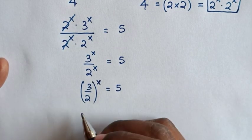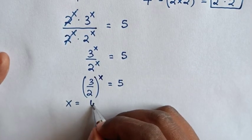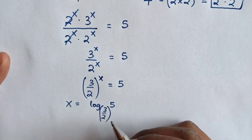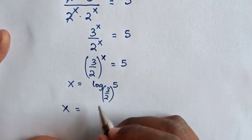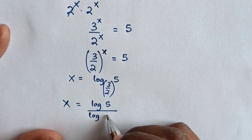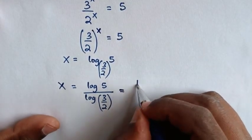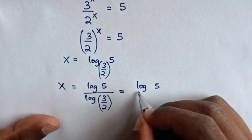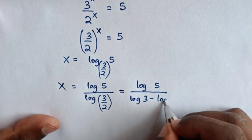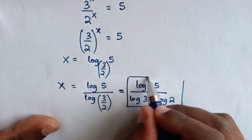To find the value of x we apply the logarithmic rule. So x is equal to log of 5 base (3 over 2), which equals log of 5 over log of (3 over 2). This is the same as log of 5 over log of 3 minus log of 2. So this is the value of x in terms of log.